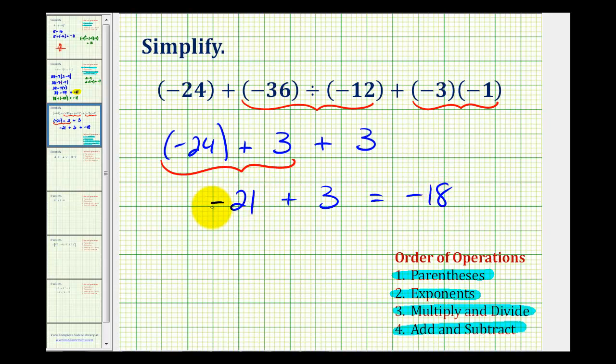If it makes more sense, a loss of 21 dollars plus a gain of 3 dollars results in a loss of 18 dollars.